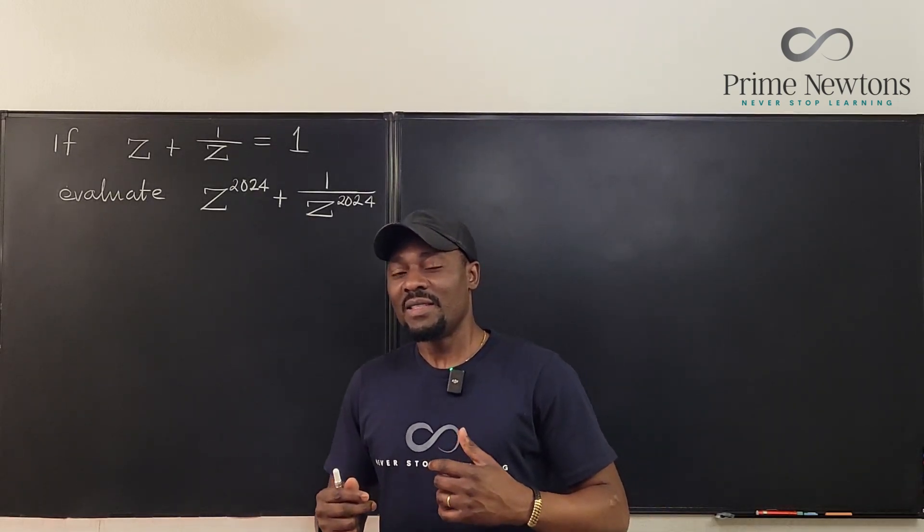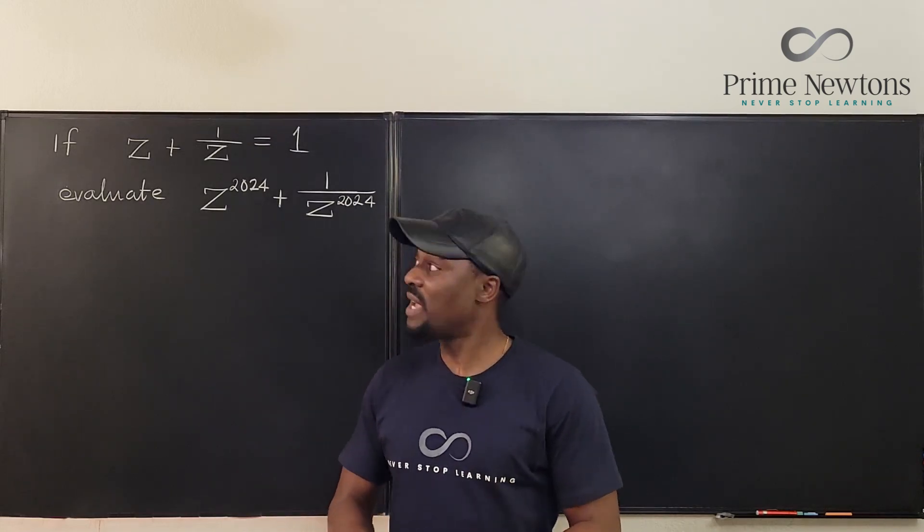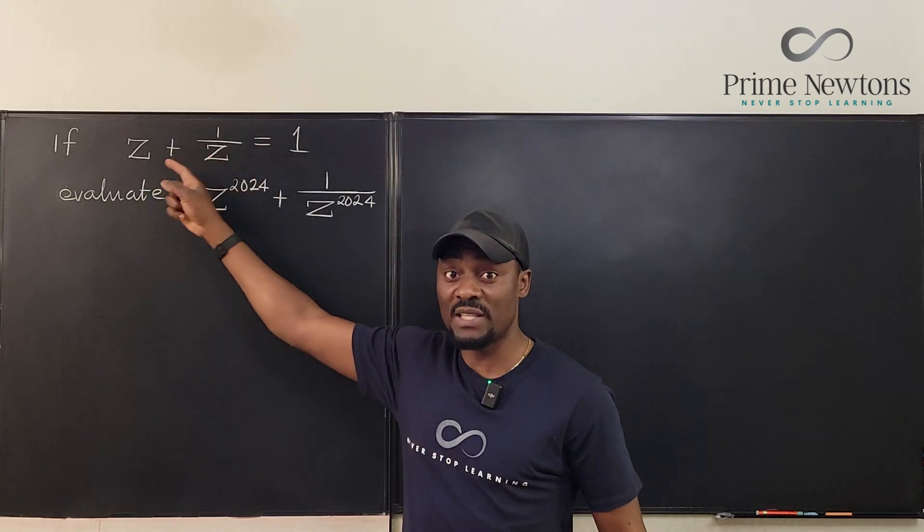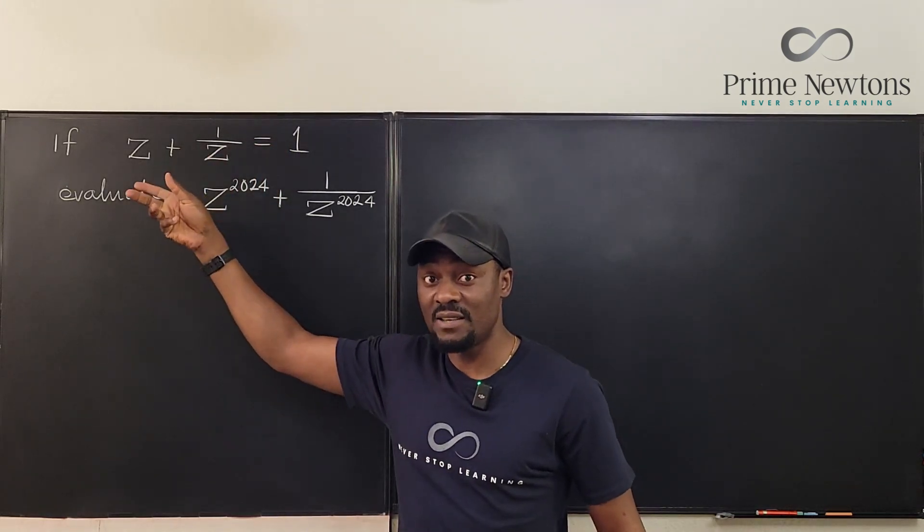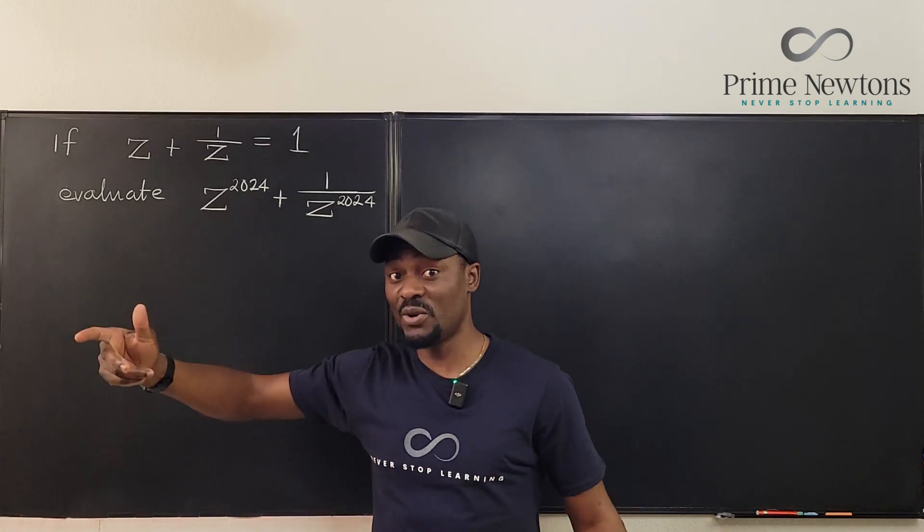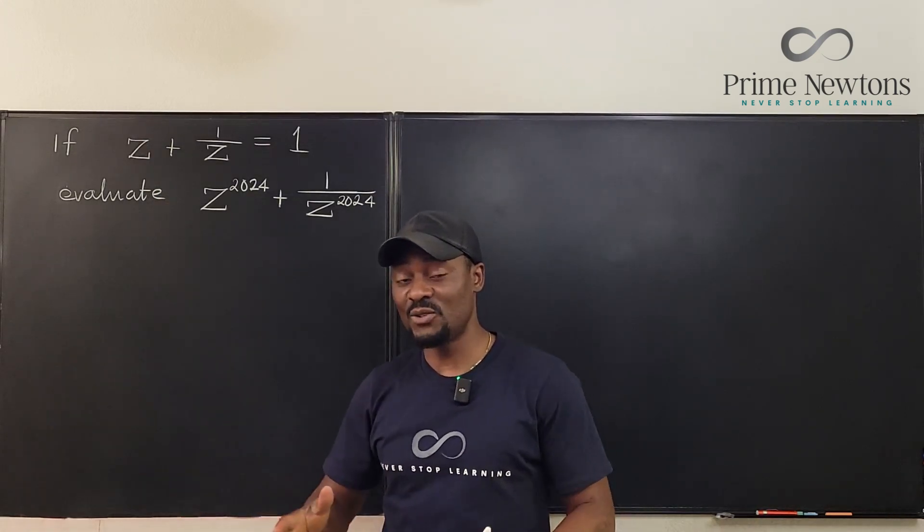Now, there are about three ways I know to solve this. The first way is to actually find z. You can convert this into a quadratic equation and get z, raise it to 2024, find the reciprocal of your answer, and then add the two answers together. That's one option.